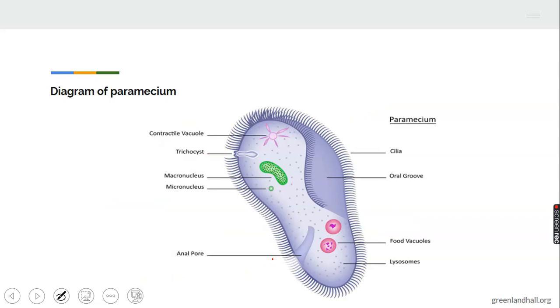Another microscopic unicellular organism is the paramecium. The paramecium is slipper shape. It has two contractile vacuoles, the anterior and the posterior. It has two nuclei, the small one, micro and the big one, macro. It has cilia for movement. Also food vacuole and lysosome which we don't have in the amoeba. It has oral groove.